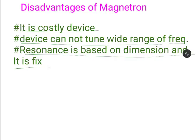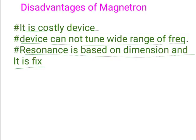Applications of the magnetron include: it can be used in microwave ovens, in lighting such as the sulphur lamp, and as a microwave generator — which is a very important application. So this is how we can use the magnetron as an oscillator.